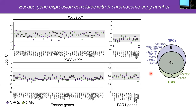Most escape genes are consistent between the two tissue types — 48 in common — but there are some instances of tissue-specific or cell-type-specific expression. In NPCs, PCDH11X is expressed, involved in neuroplasticity. In cardiomyocytes, KLHL4 and CLTRN are specifically escaping.